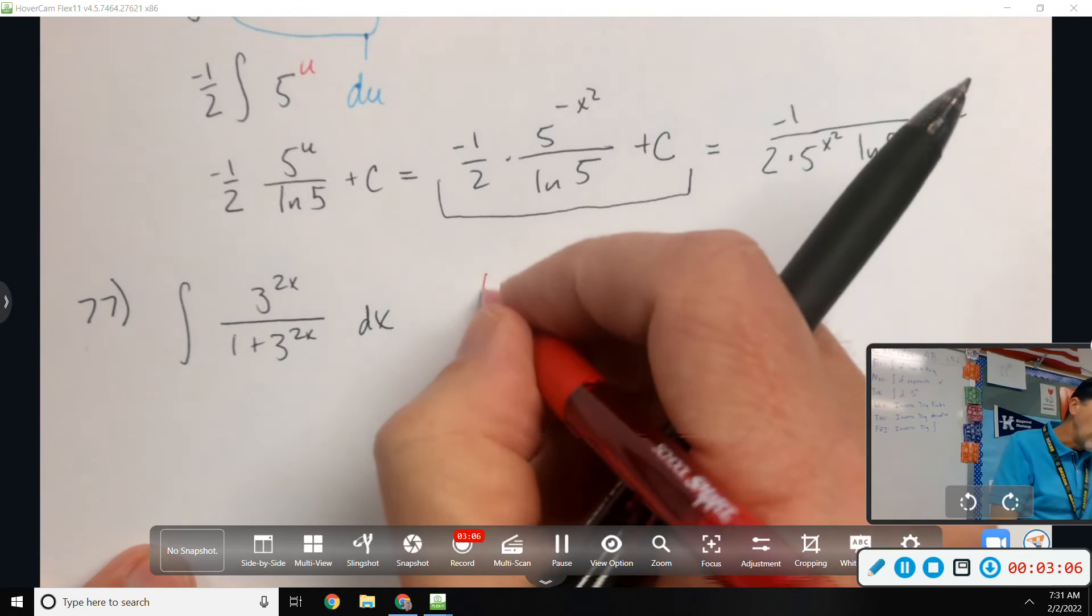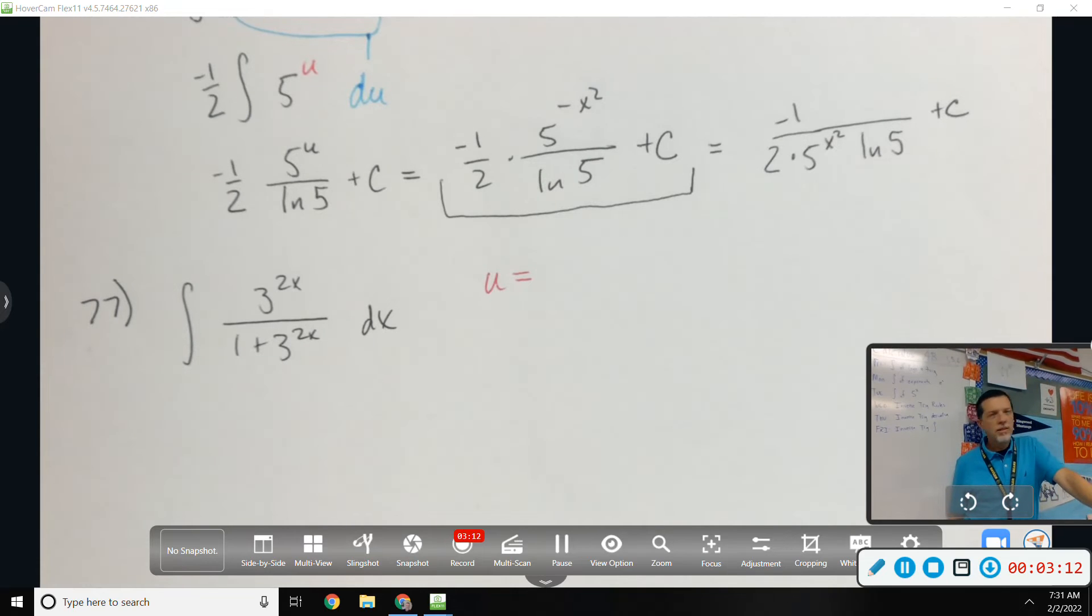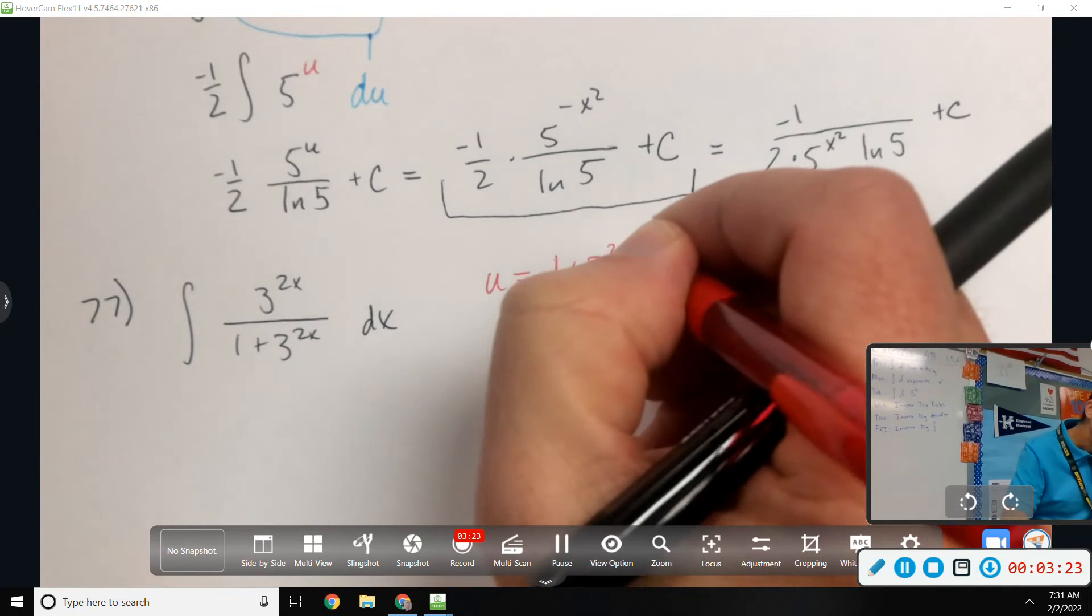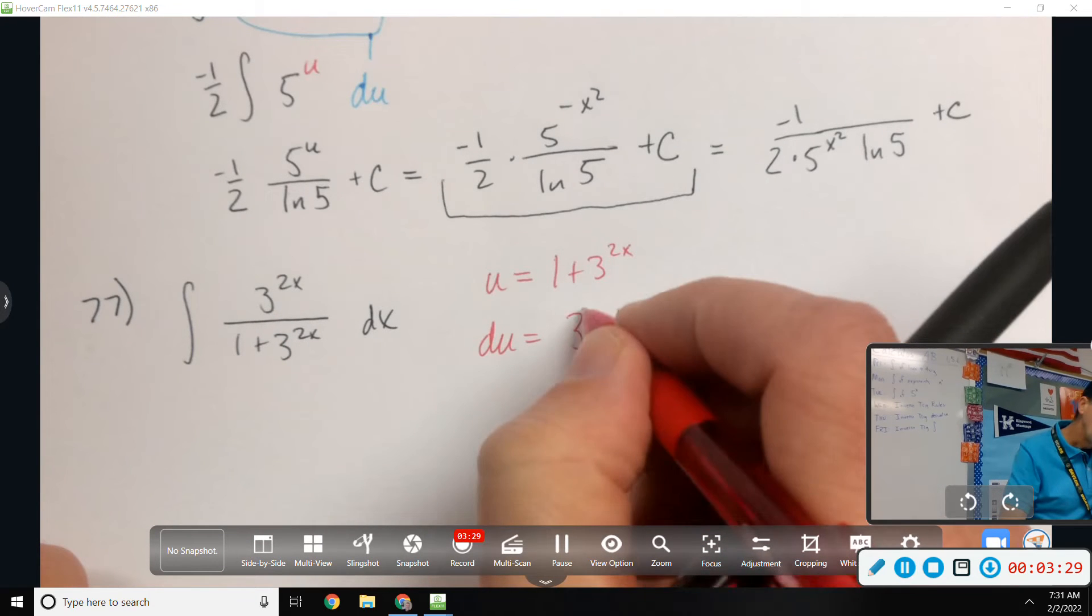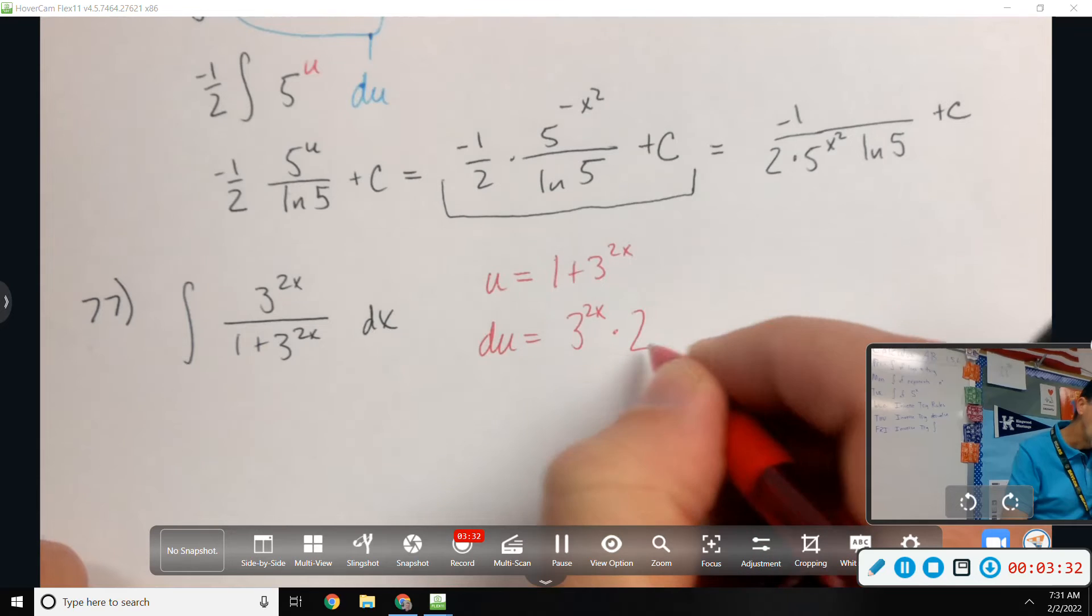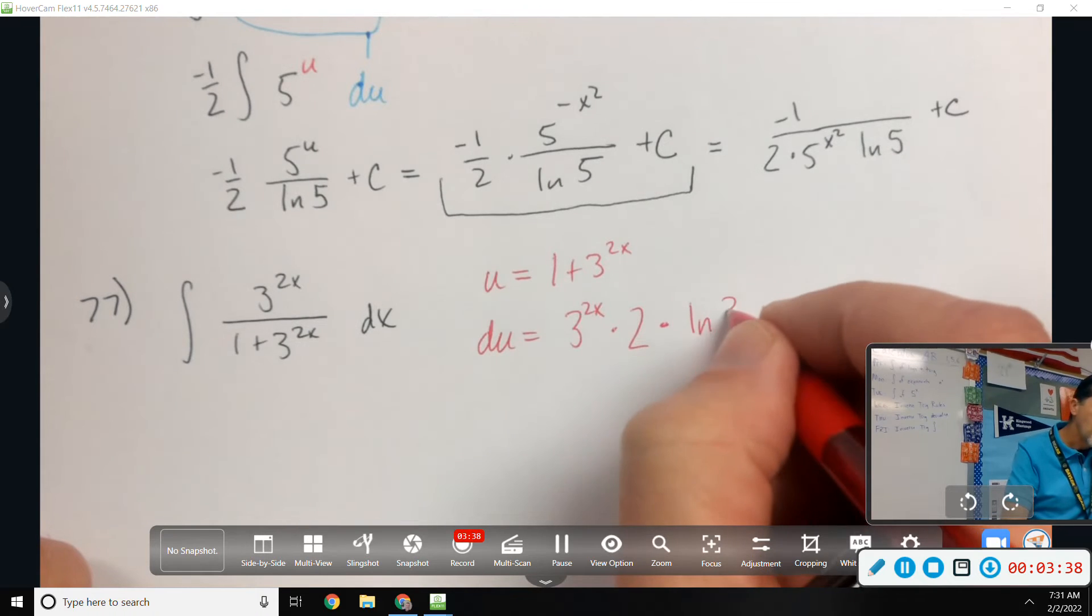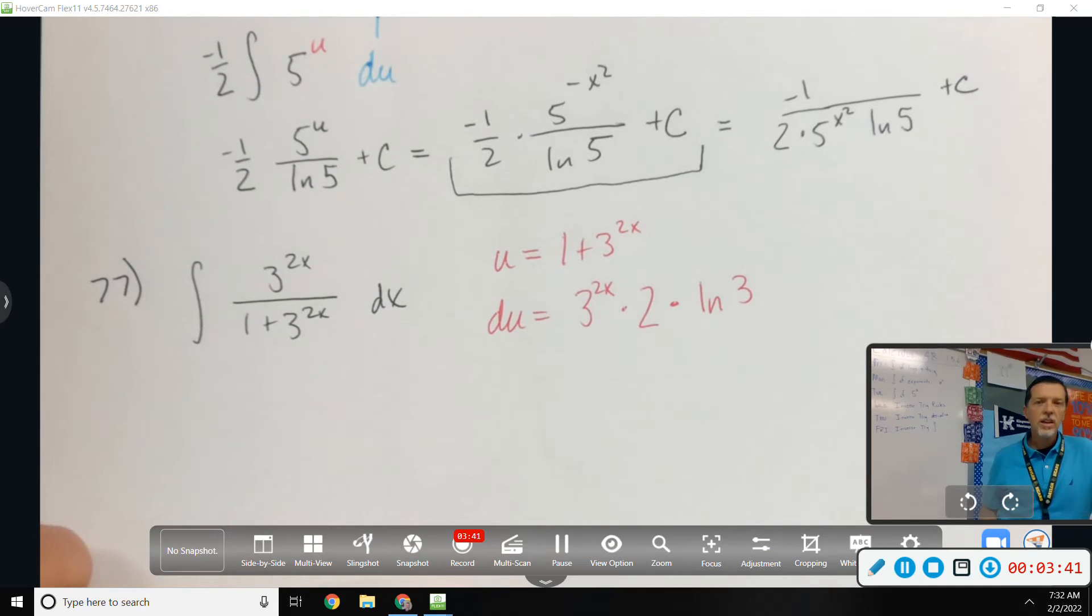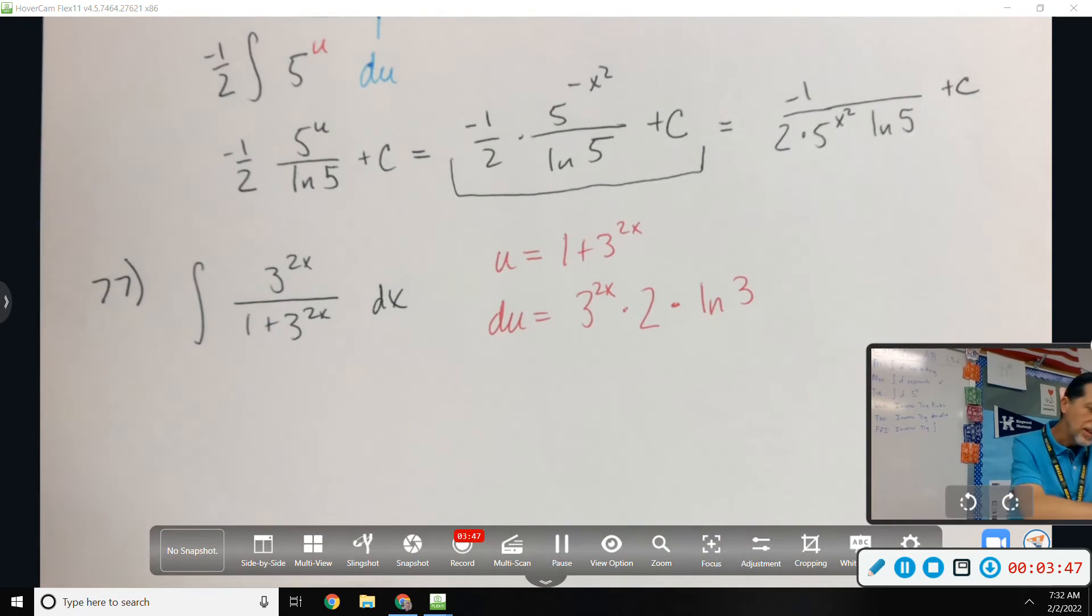Any guesses on what u should be that would make things work out? Remember, we want to pick u so that du shows up. Let's let u be the denominator, because then du is pretty close to the top: 3 to the 2x, chain rule, times 2. And then the bonus piece of this, 3 to the x means I need a natural log of 3. So that's pretty close. I'm only off by a constant. It's not a nice constant, but at least it's just a constant.